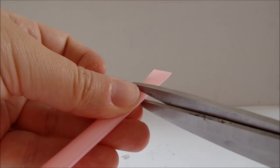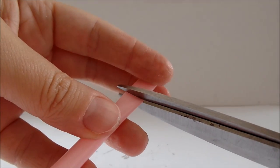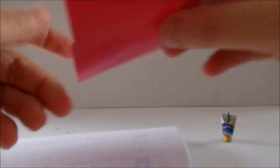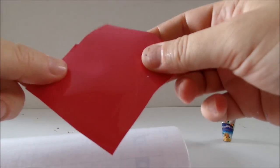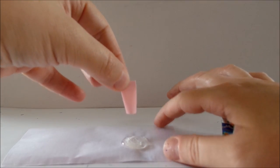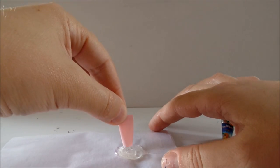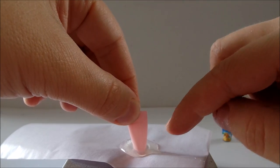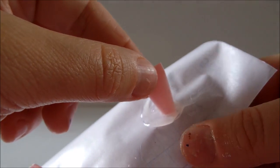Take a non-sticking surface such as the back side of this contact paper. Put some glue on it and place your piece of straw on the glue. Allow the glue to solidify.